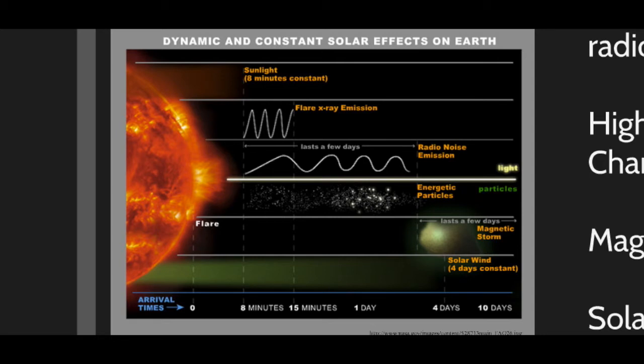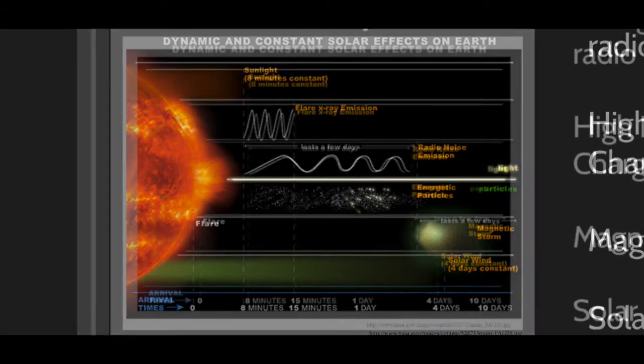When a solar flare or coronal mass ejection occurs, very energetic charged particles are produced, but they are not traveling at the speed of light. From a solar flare, charged particles reach us in about a day. A magnetic storm can last a couple of days and takes three to four days to arrive. The solar wind takes about four to ten days for coronal particles to reach us.